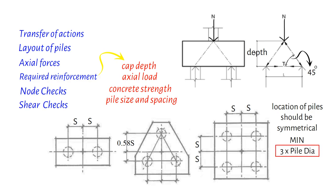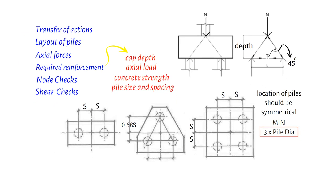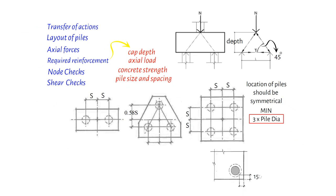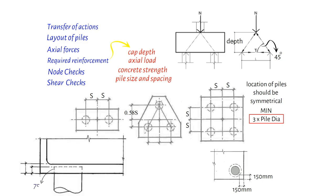For pile caps with one or two piles, some restraint is required orthogonally to the piles and is usually achieved through ground beams. The edge of a pile cap should be no less than 150 mm from the edge of a pile, and the head of the pile penetrates the soffit of the cap by at least 75 mm.